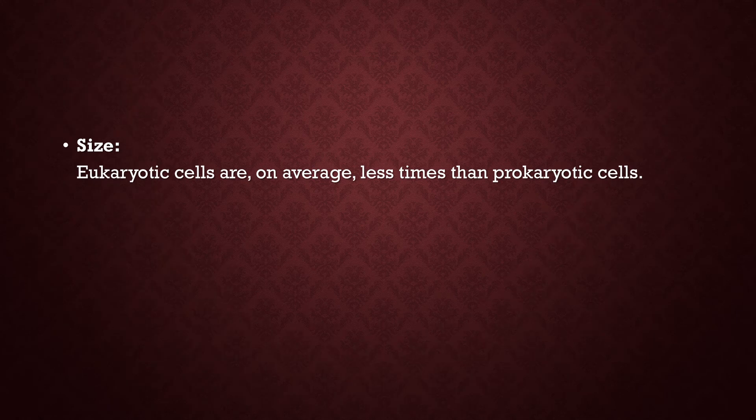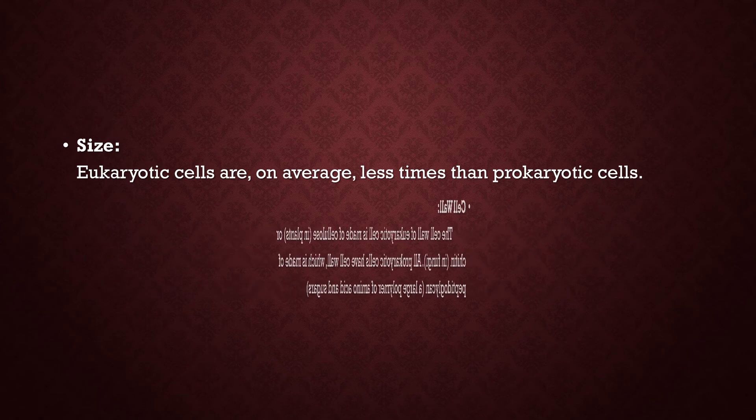The next difference between prokaryotes and eukaryotes is size. Eukaryotic cells are on average 10 times larger than prokaryotic cells. This is another MCQ point: eukaryotic cells are 10 times larger than prokaryotic cells.